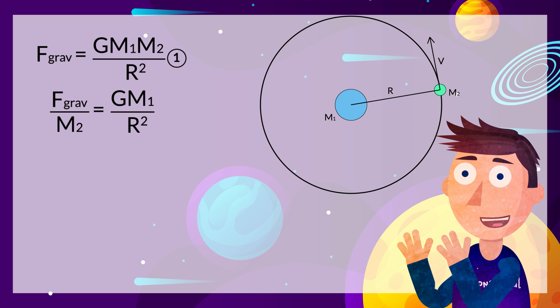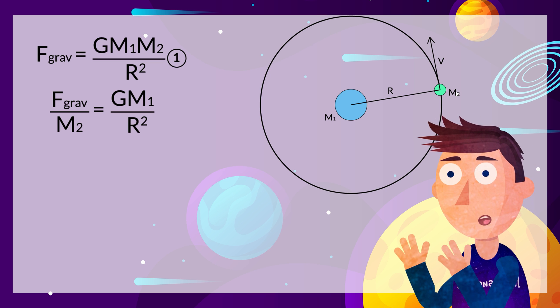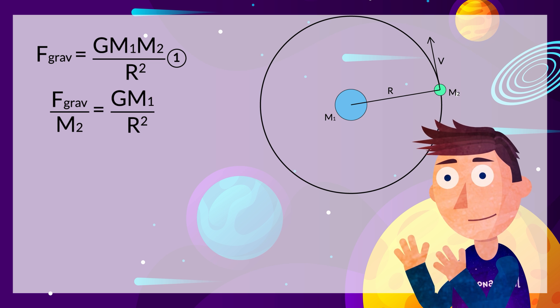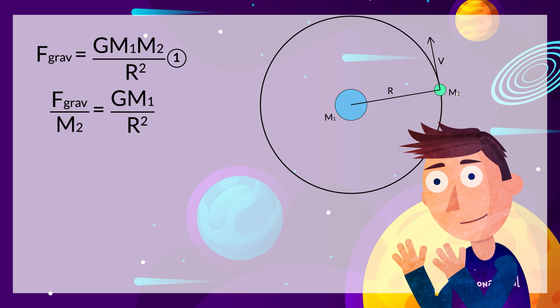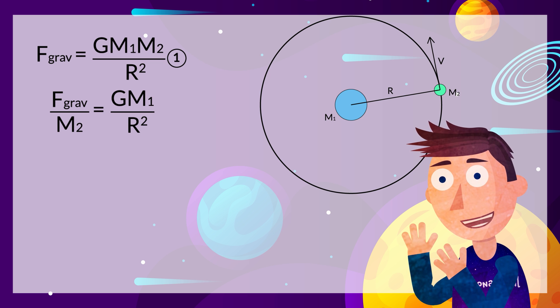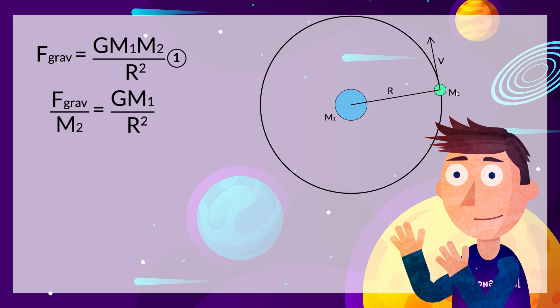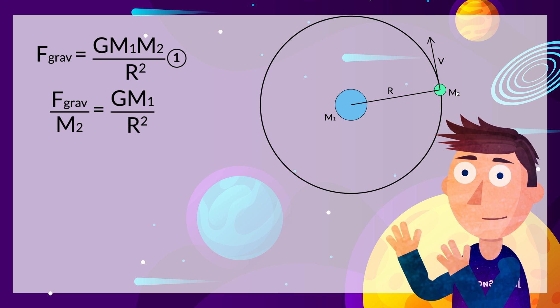The key thing to take away from this is that there is an inverse square law in play here with the force between the two objects and the distance between them. So if you move twice as far away, you only have quarter of the gravitational attraction.